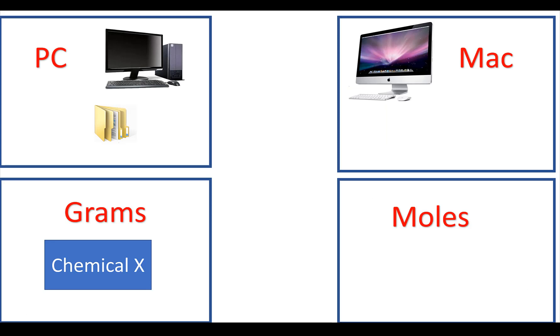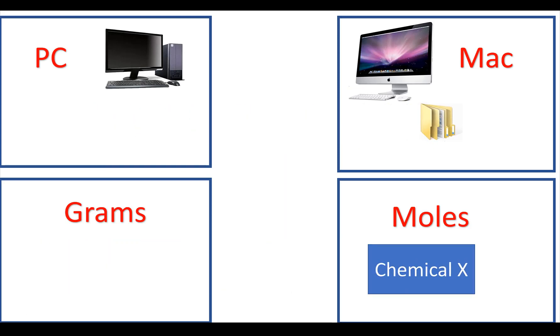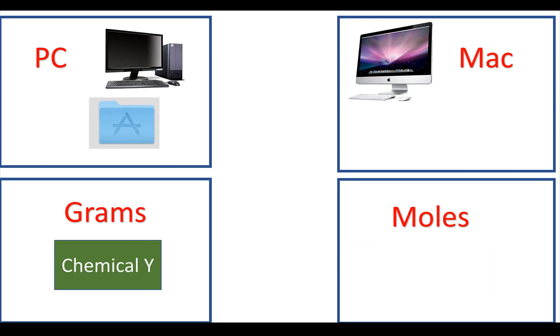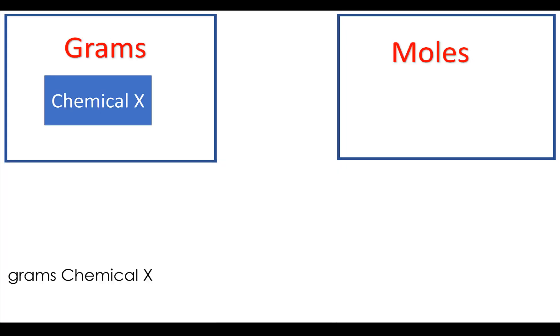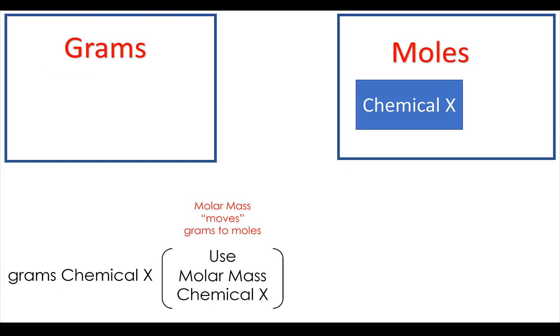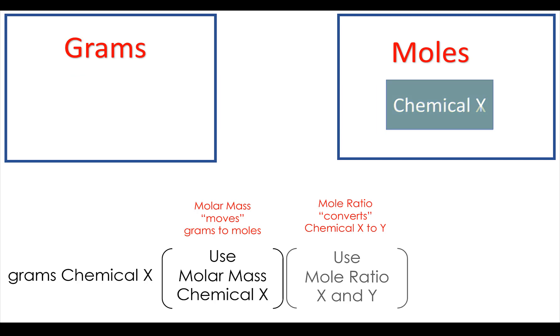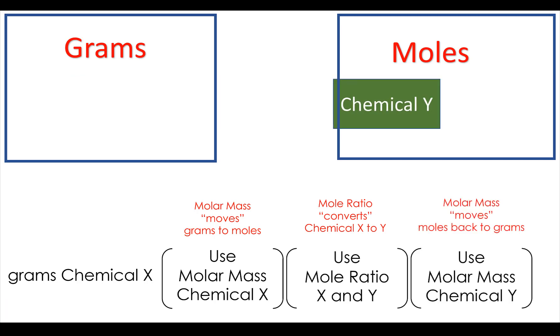So what we do is we multiply by the molar mass, we multiply by the molar ratio, and then we multiply by the molar mass again. Except the inverse molar mass at the beginning, but whatever. We have grams of chemical X, we use the molar mass as a flash drive, we use the mole ratio to convert, and then we use the molar mass again to go back into grams.